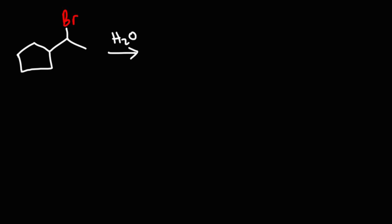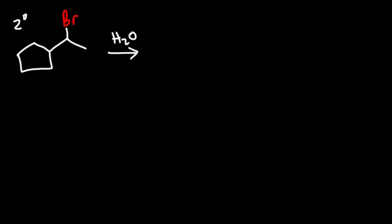The first thing we need to do is determine what type of mechanism we're dealing with — SN1, E1, SN2, or E2. What we have here is a secondary alkyl halide; the carbon that bears the bromine atom is attached to two other carbon atoms, making it secondary. We have a protic solvent, so these conditions favor the SN1 reaction.